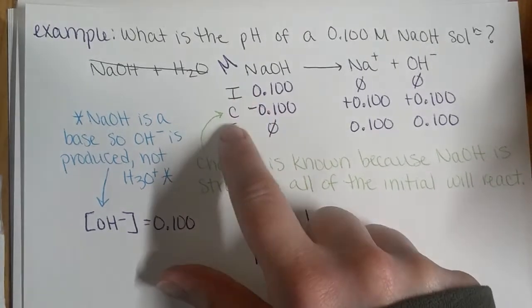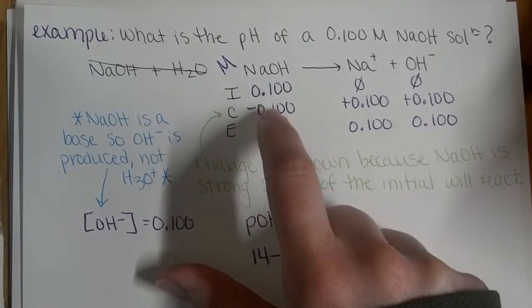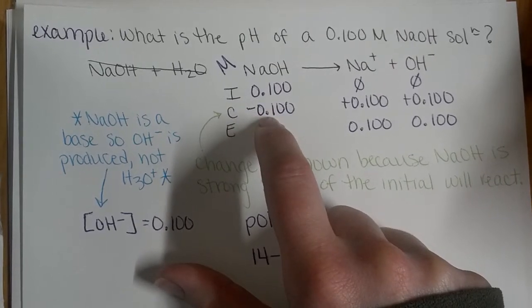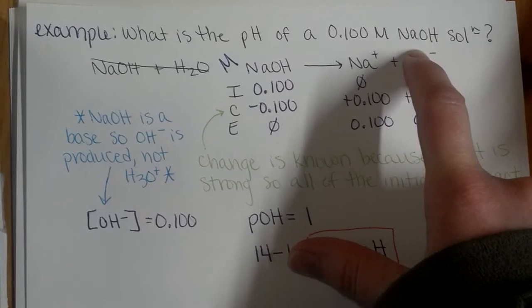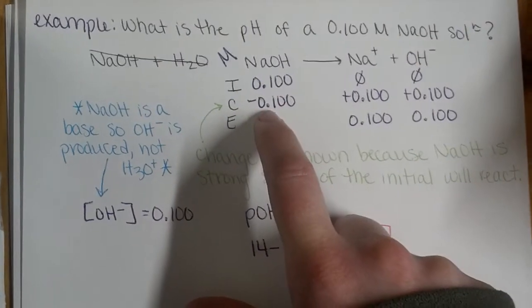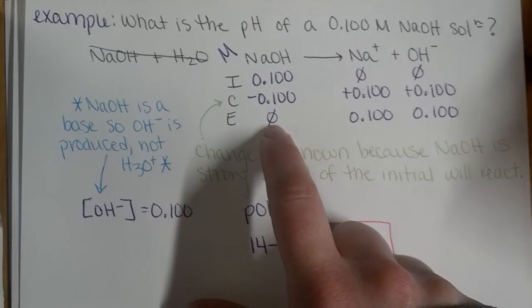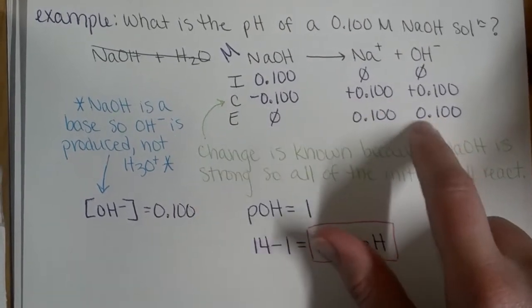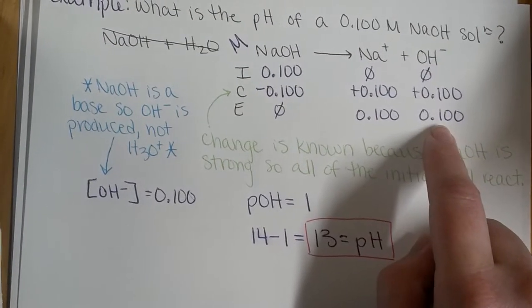So ICE table, again, 0.100 is our starting concentration. Our change is known because sodium hydroxide is strong, so all of it is going to dissociate, all of it will react, so we'll end up with zero here. And then our key is our concentration of the hydroxide ion is 0.100.